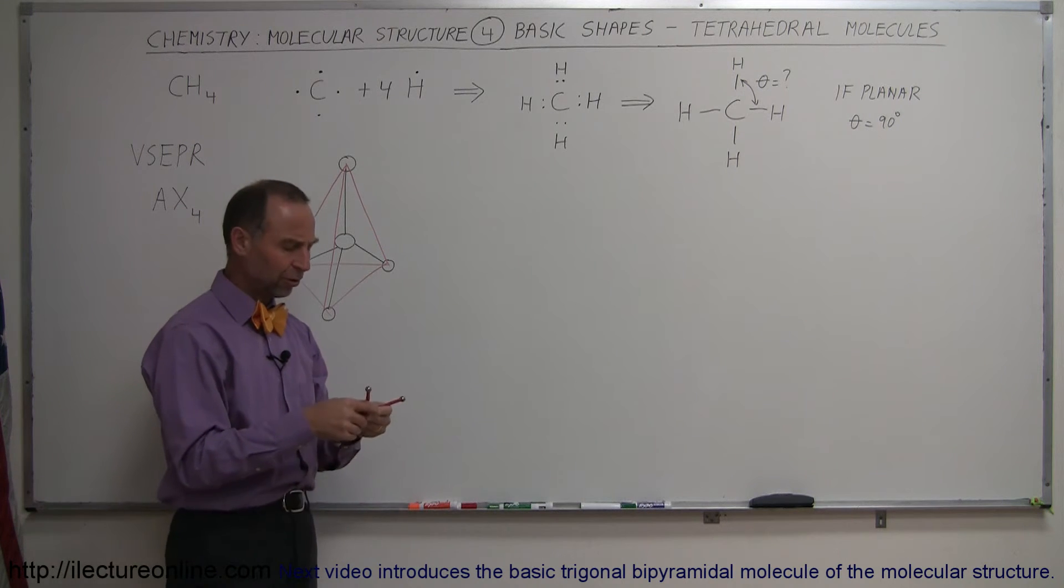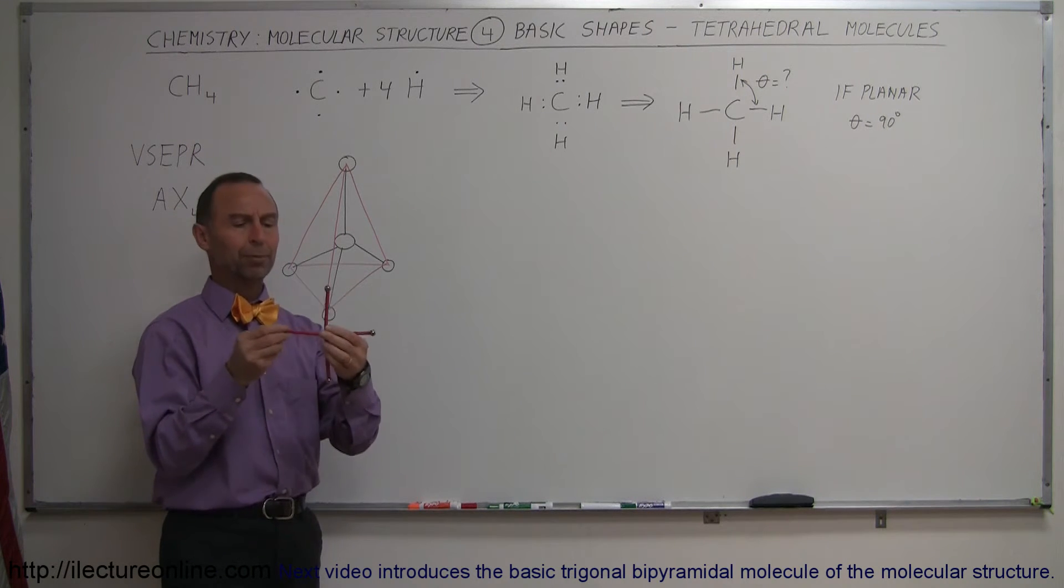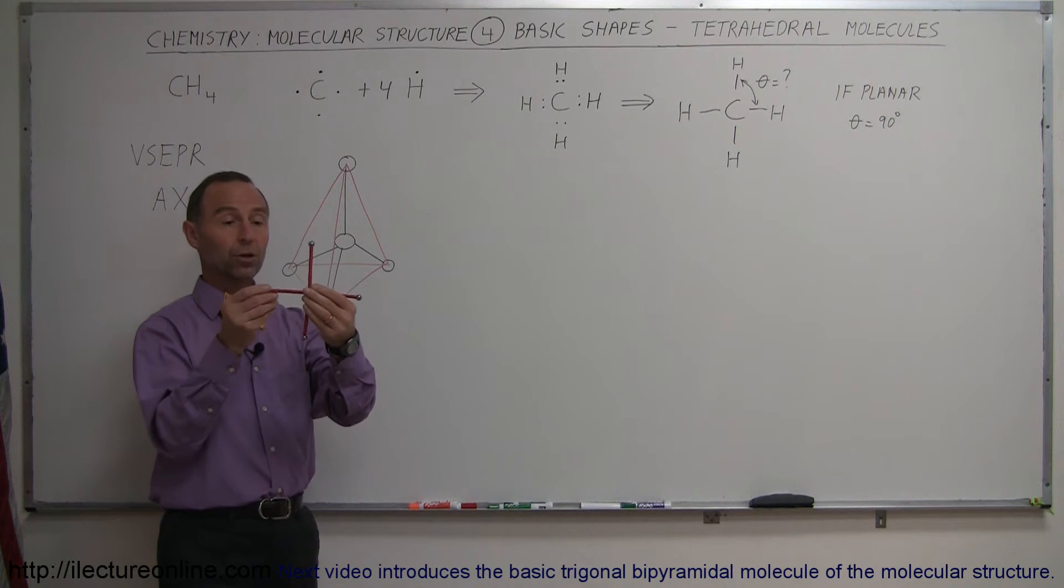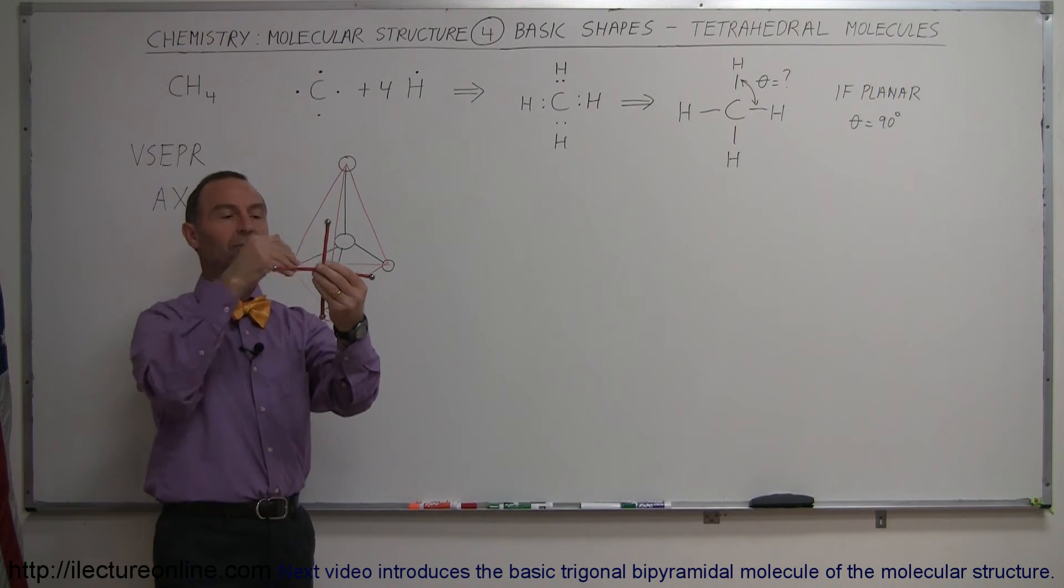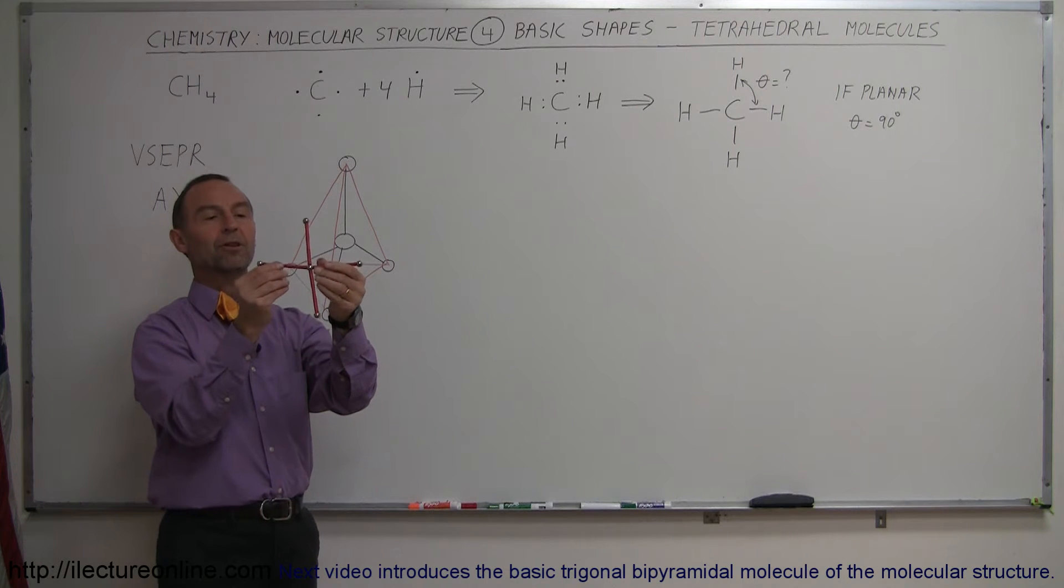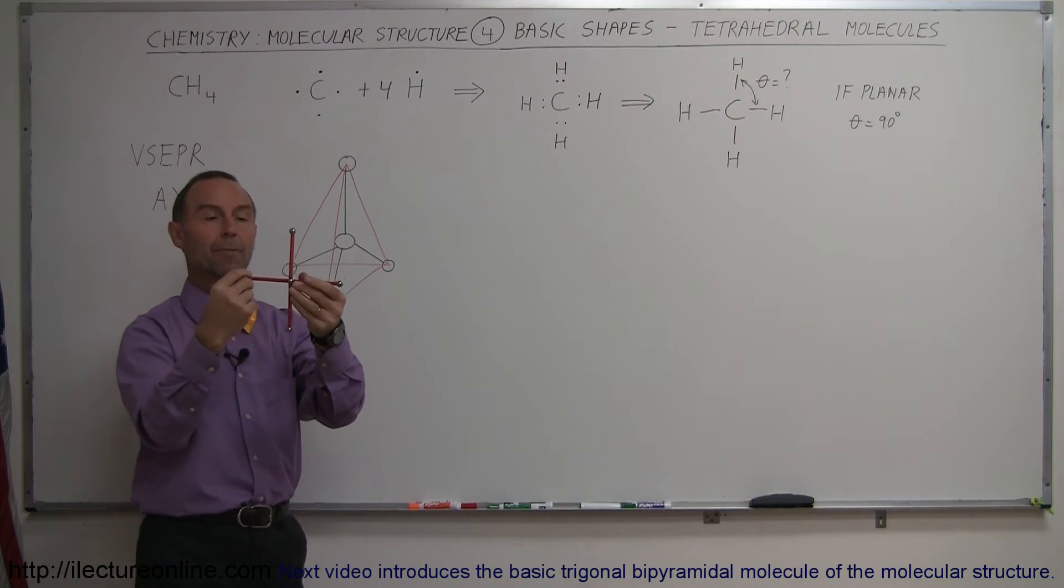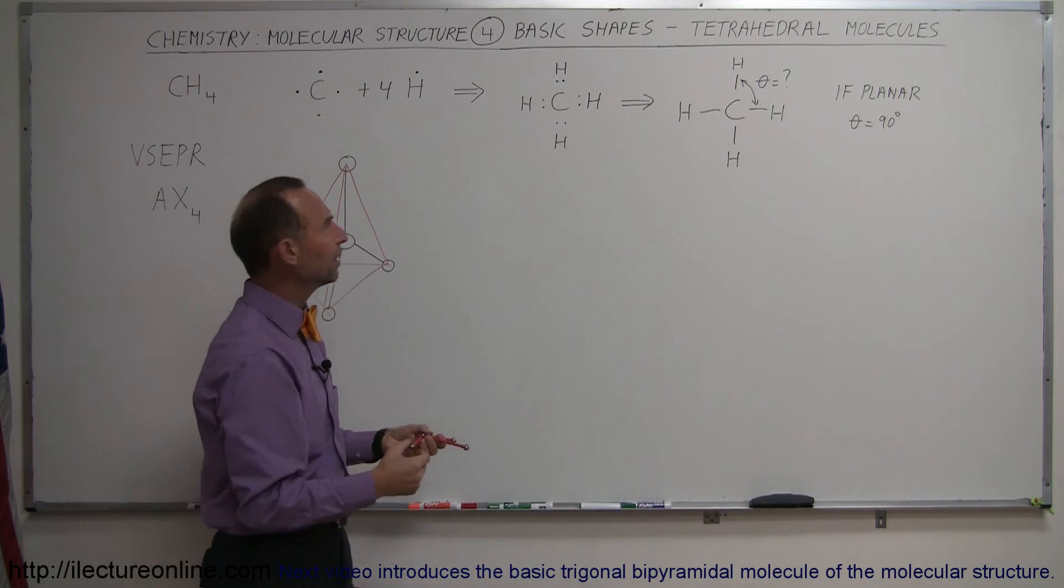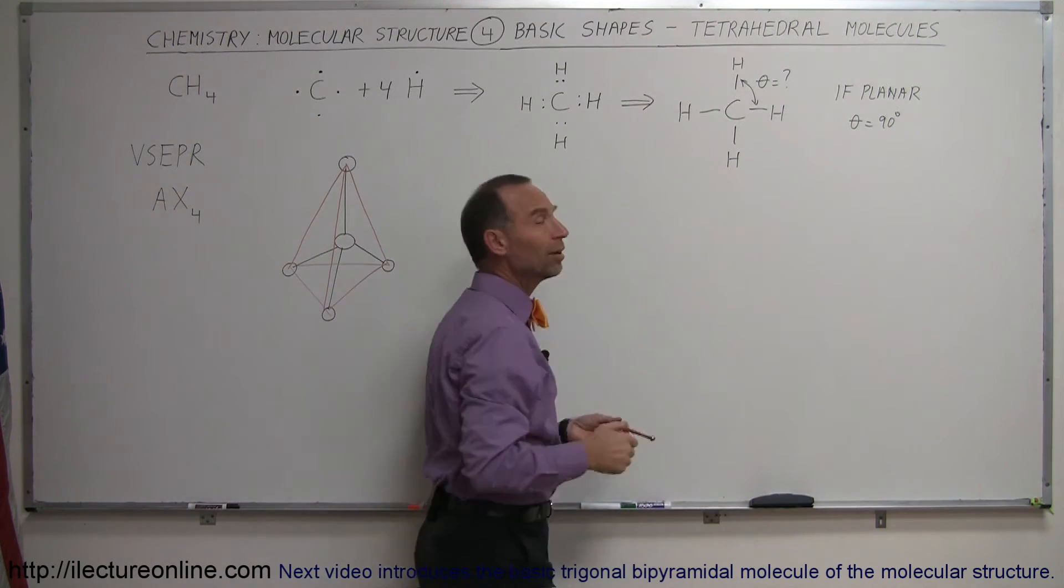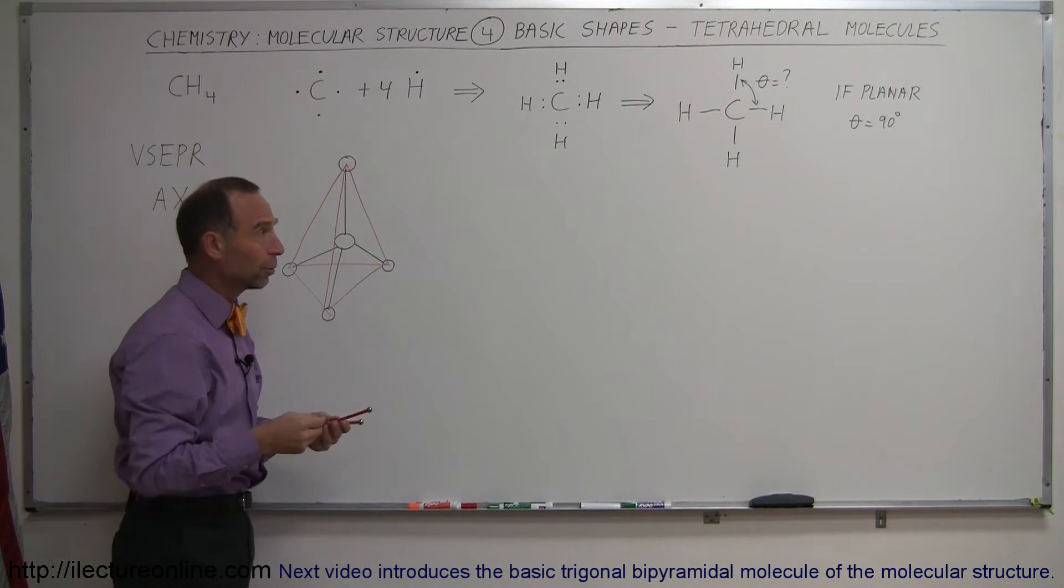Now you may ask yourself, why doesn't it form a planar bond like that? Wouldn't the electrons in the bonds be as far away from each other as possible when they're like this? Because you can see here that the bond angles in this case would be 90 degrees. So the question is, why isn't it 90 degrees? If it was a planar molecule, that's what it would be.